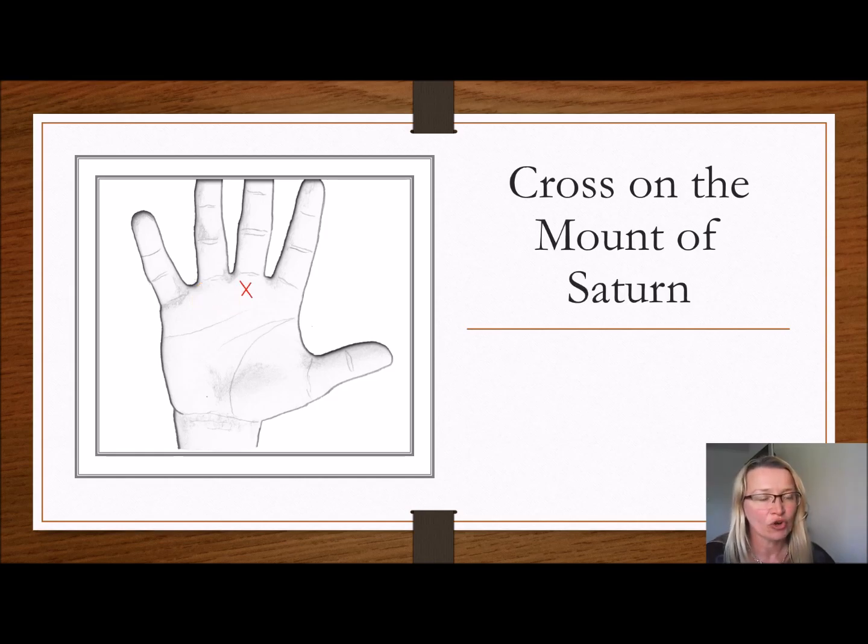Next, we have the cross on the Saturn mount, the mount under the middle finger. Now that can depict a challenging situation in career, in family. It can vary, but it's depicting something is challenging the person at the time. And don't forget, it has to stand on its own. And these crosses can come and go. They're usually quite faint and they appear for periods of time. Sometimes they stay permanently, sometimes they go away. So it can depict some form of tragedy as well, because it's under Saturn. Saturn is a little bit melancholy and a little bit more serious.